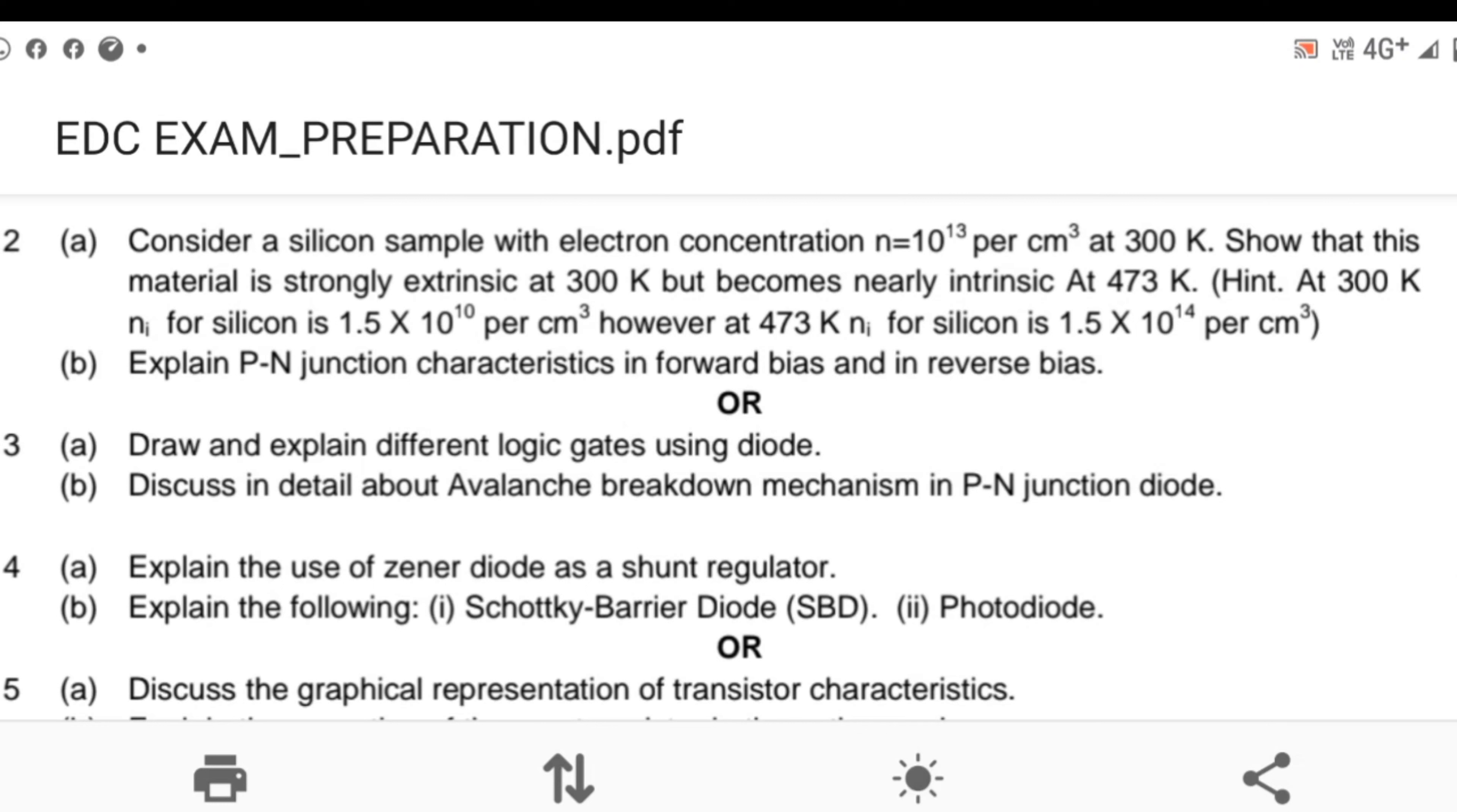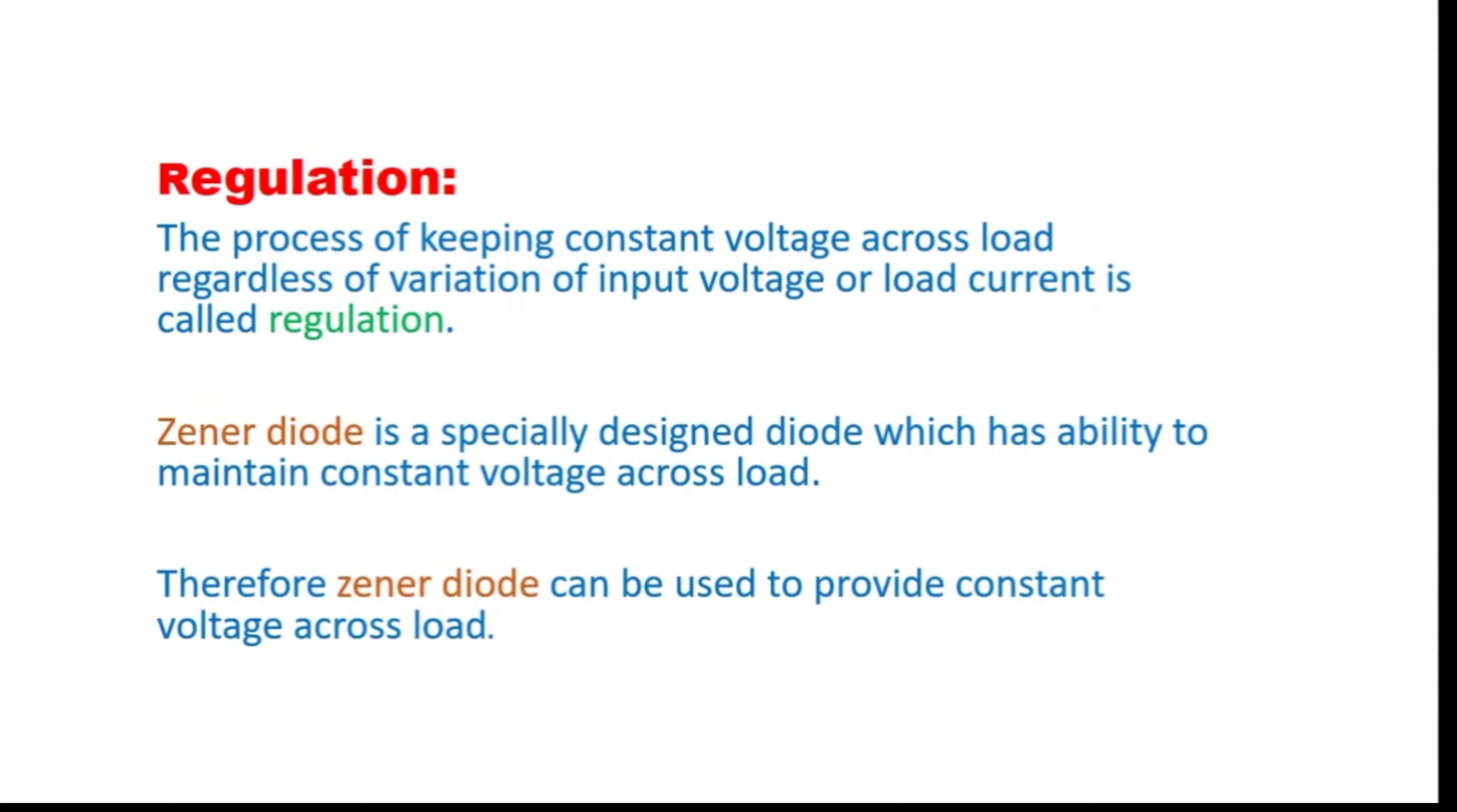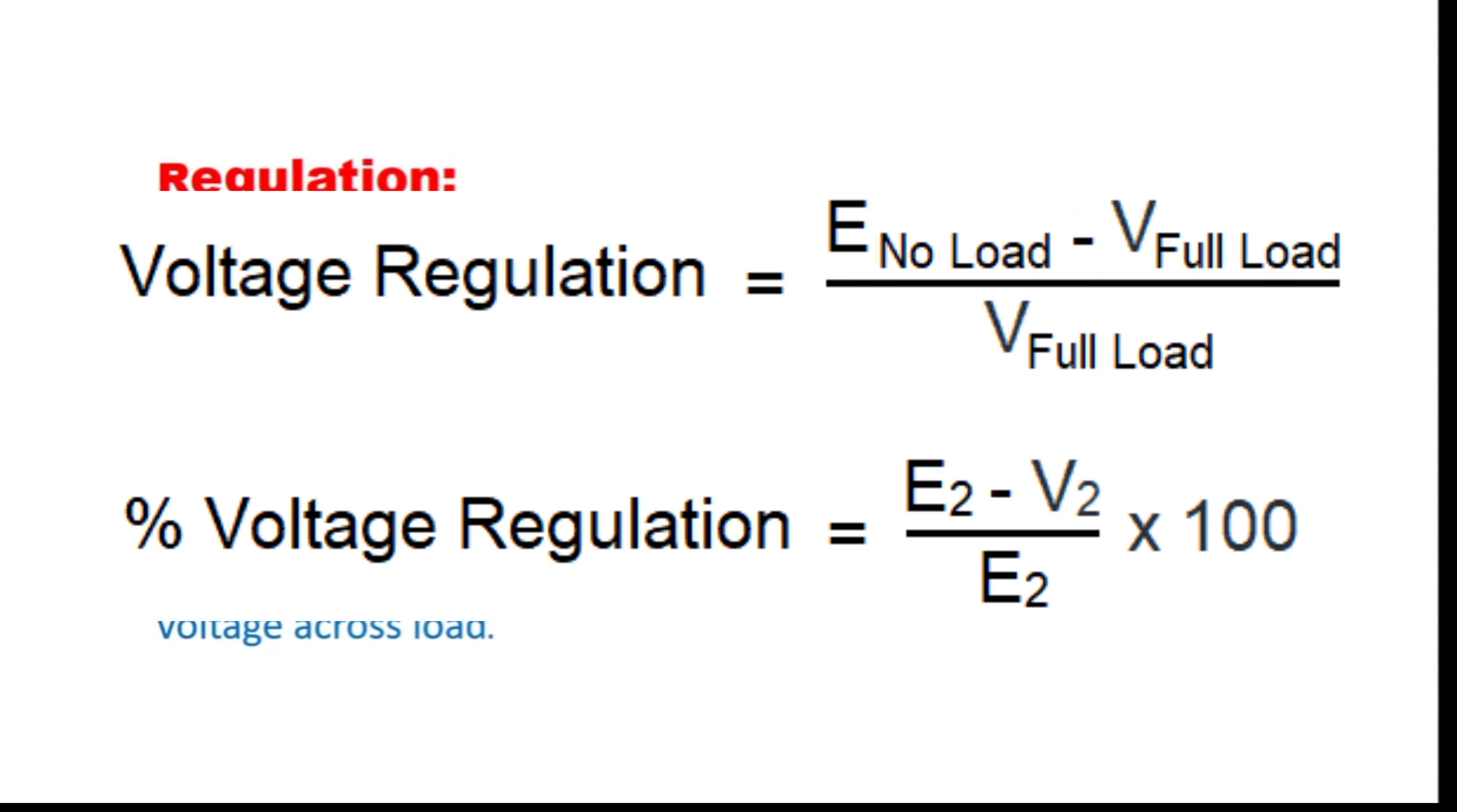First of all, what is voltage regulation? Voltage regulation means making the constant voltage across the load, regardless of variation of input voltage or load current. Whatever be the change in voltage, input voltage or input current, the load voltage should be constant. That is called regulation. The change in terminal voltage from no load to full load is called voltage regulation.